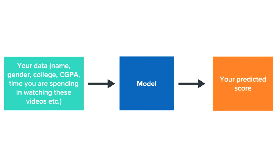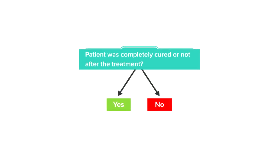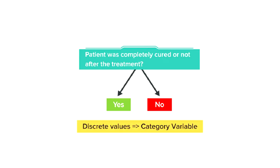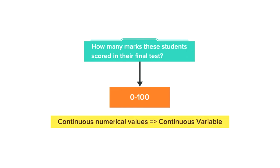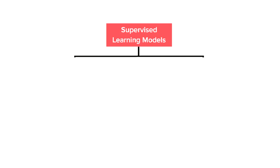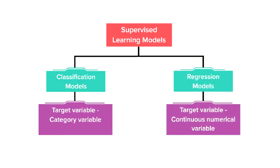One key difference between these examples of supervised learning is the kind of values you would expect in the target variable. In the case of patient data, the target variable would contain yes or no values and is called a category variable since it can have only one discrete value from a predefined set of values. While in the case of the test score prediction model, the target variable would contain a student's marks in the final test, which is a continuous numerical value — such a target variable is called a continuous variable. Accordingly, supervised learning models are further classified into two types: classification models, where the target variable is a category variable, and regression models, where the target variable is a continuous numerical variable. Most machine learning models used today are based on supervised learning.